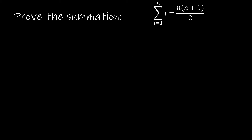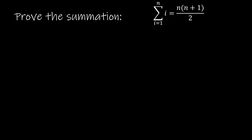For our first practice, we are going to prove that second formula from the screen, which is the summation as i goes from 1 to n of i is equal to n times n plus 1 divided by 2. So let P of n be that the summation as i goes from 1 to n of i is equal to n times n plus 1 divided by 2.